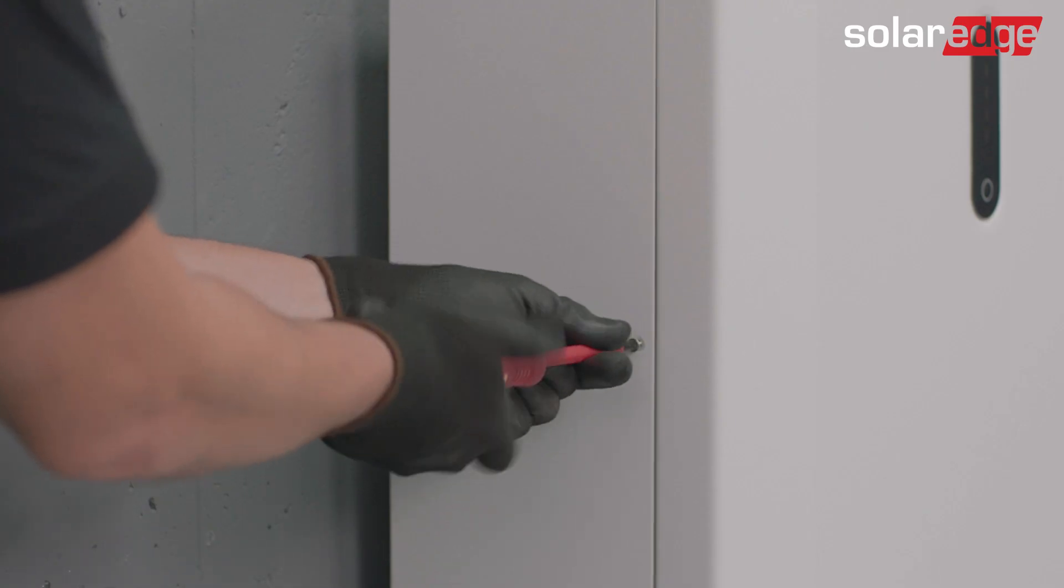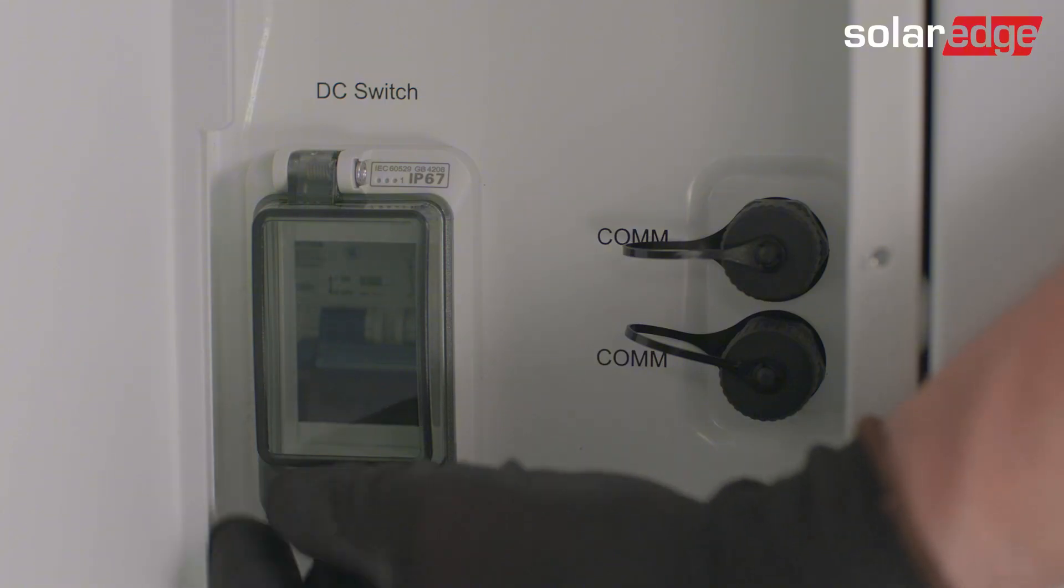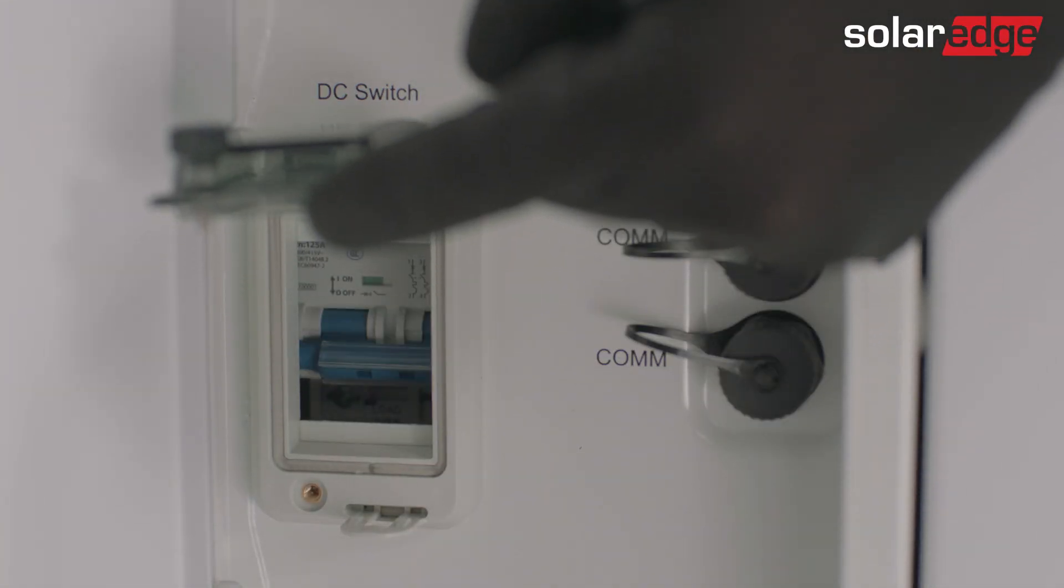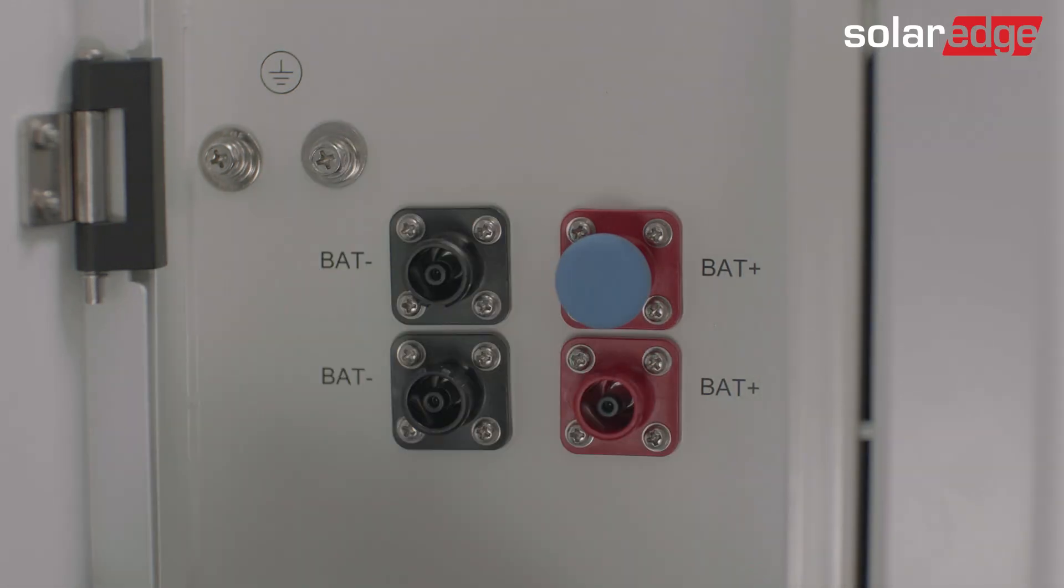First, open all of the left covers using the three screws. Before connecting any cable, make sure the circuit breakers are off in all the batteries. Then, pull the different plugins that are the sealing DC connectors and communication connections.